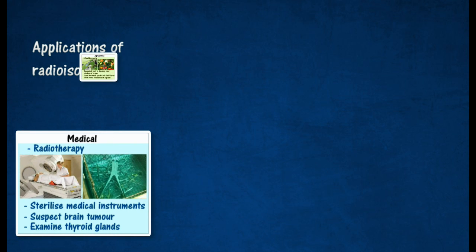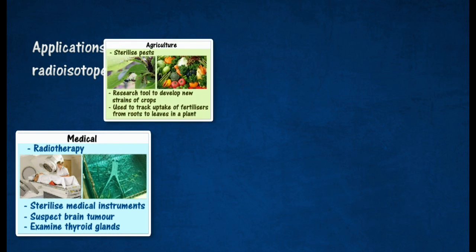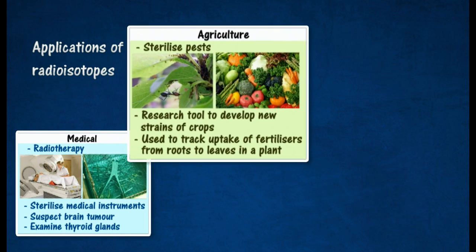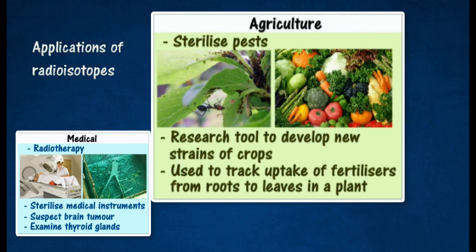In agriculture, pests are sterilized with radioactive radiation, especially gamma rays, to induce mutation which stops them from reproducing.